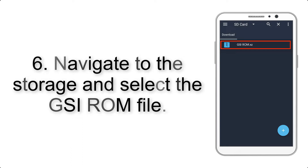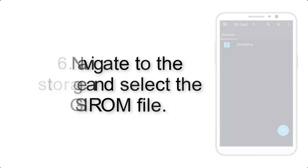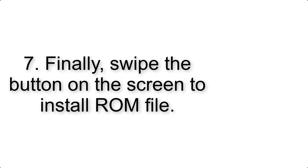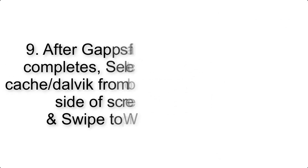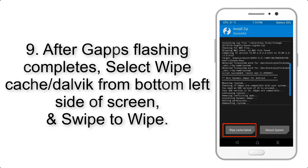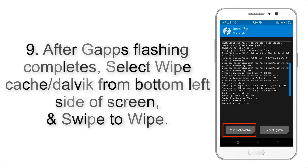Step 6: Navigate to the storage and select the GSI ROM file. Step 7: Swipe the button on the screen to install the ROM file. Step 9: After GApps flashing completes, select Wipe Cache and Dalvik from the bottom left side of the screen.